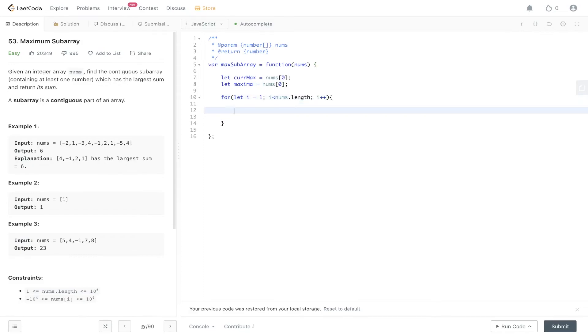Then we just need to update current max and maximum. And current max is going to be the recursive relation within this dynamic programming solution. So it's going to be the maximum between nums at i and current max plus nums at i. And then we just need to update the maxima, which is going to be equal to the maximum between maxima and current max. And then we can just return maxima and give this a go.